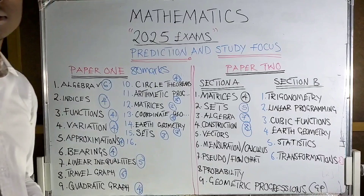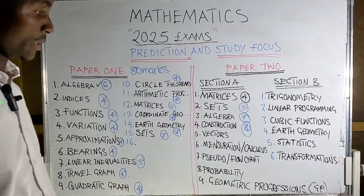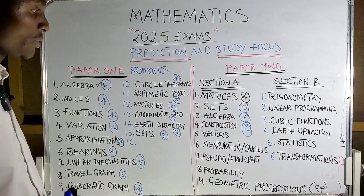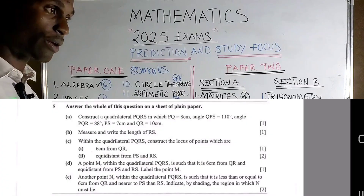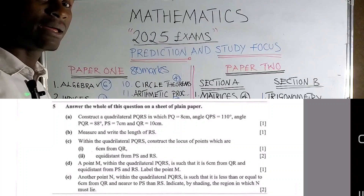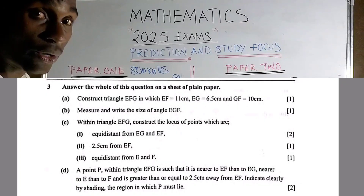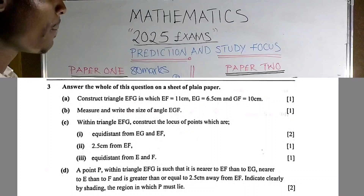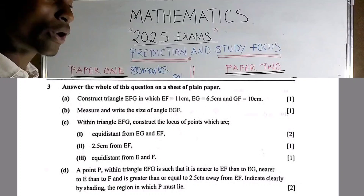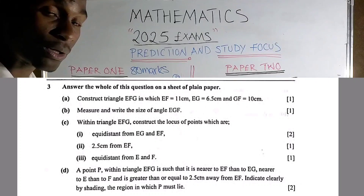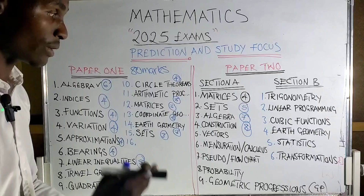Construction is eight marks in the exam. You need to know how to construct a polygon — either a quadrilateral, which is a four-sided polygon, or a triangle, which is a three-sided polygon. That is what construction involves — knowing how to construct these two types of polygons.